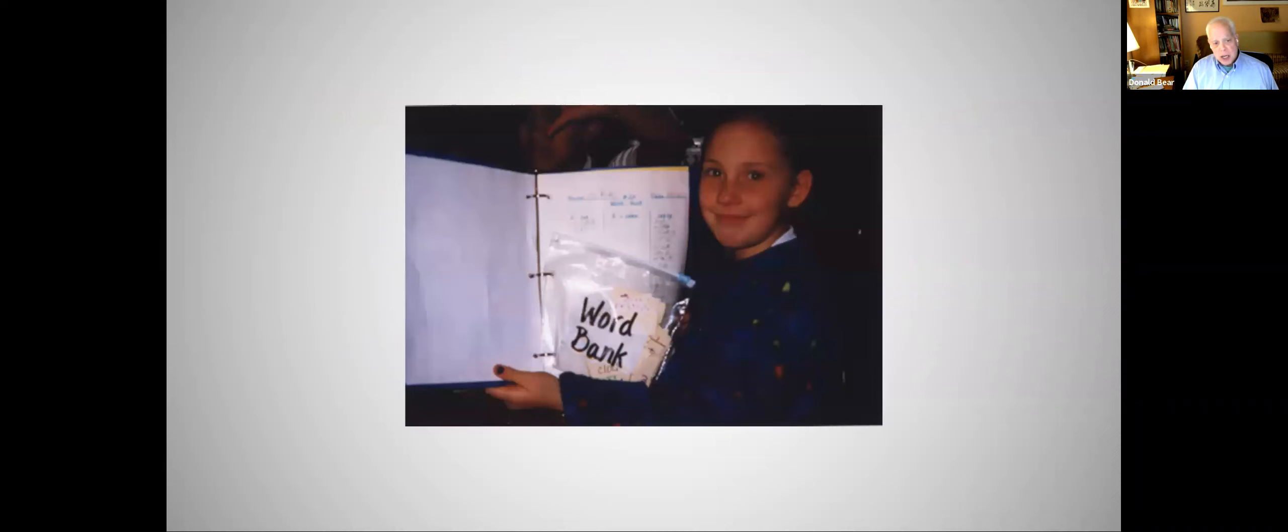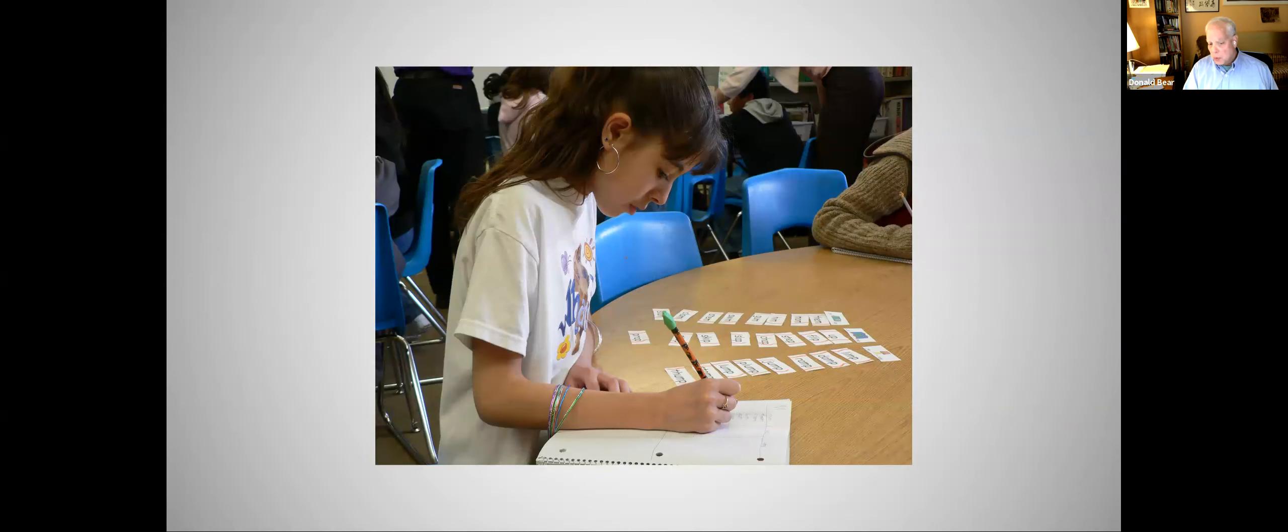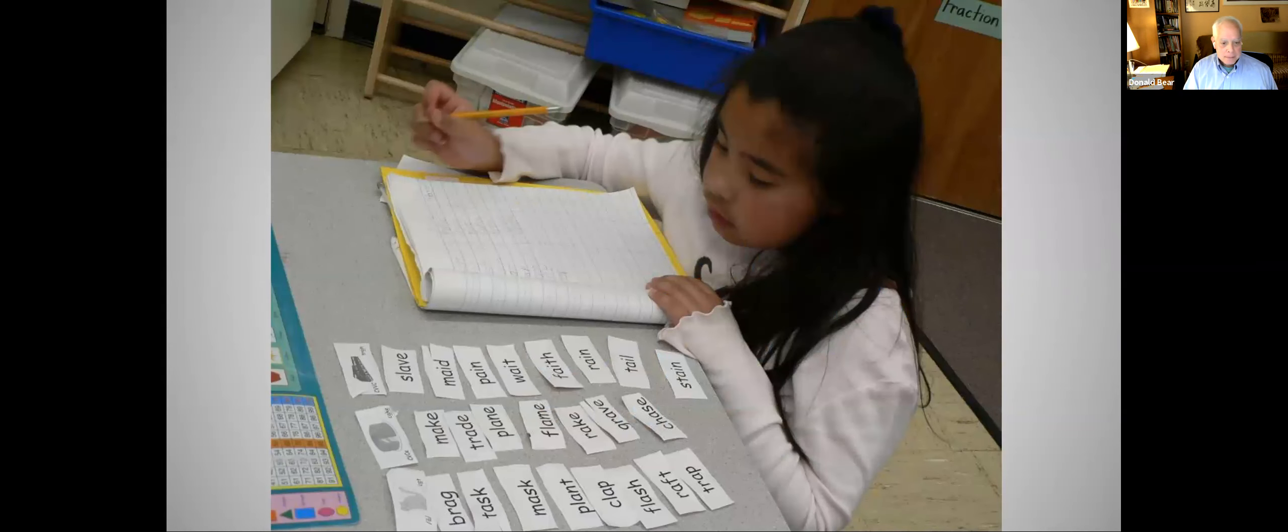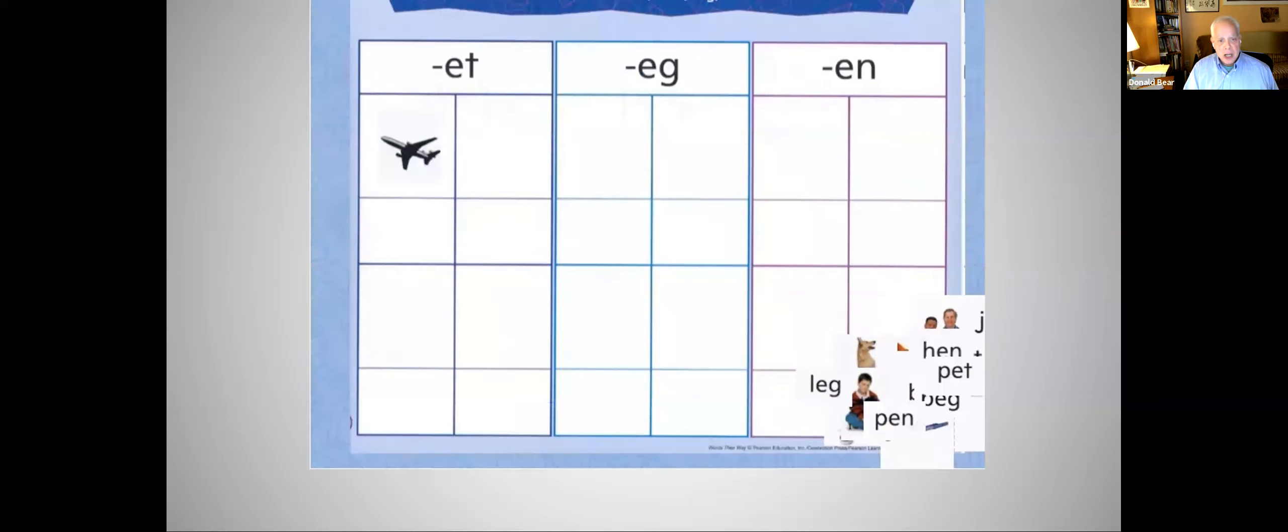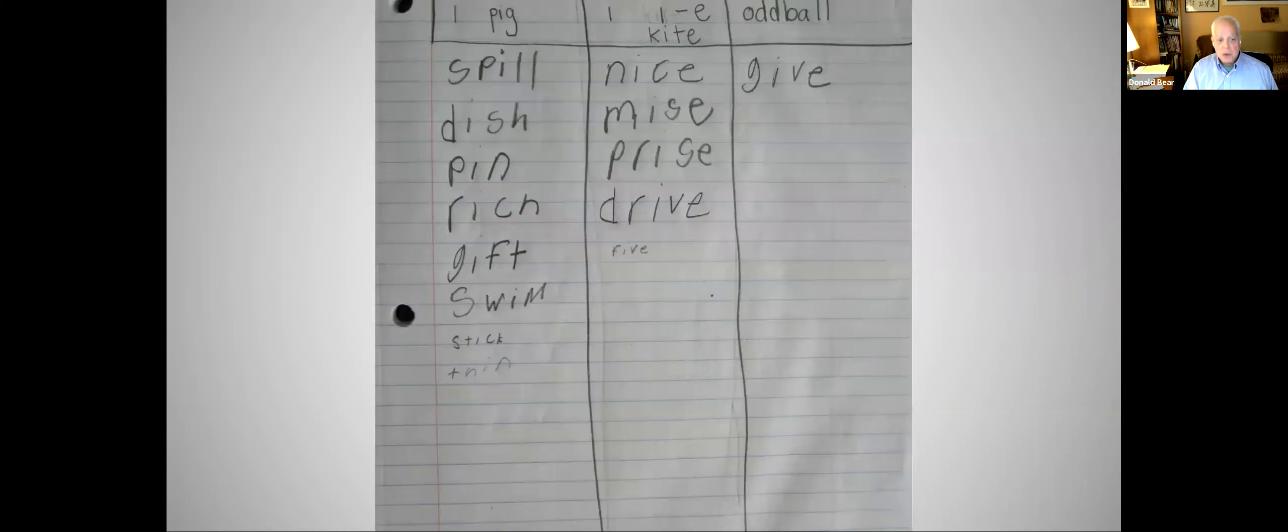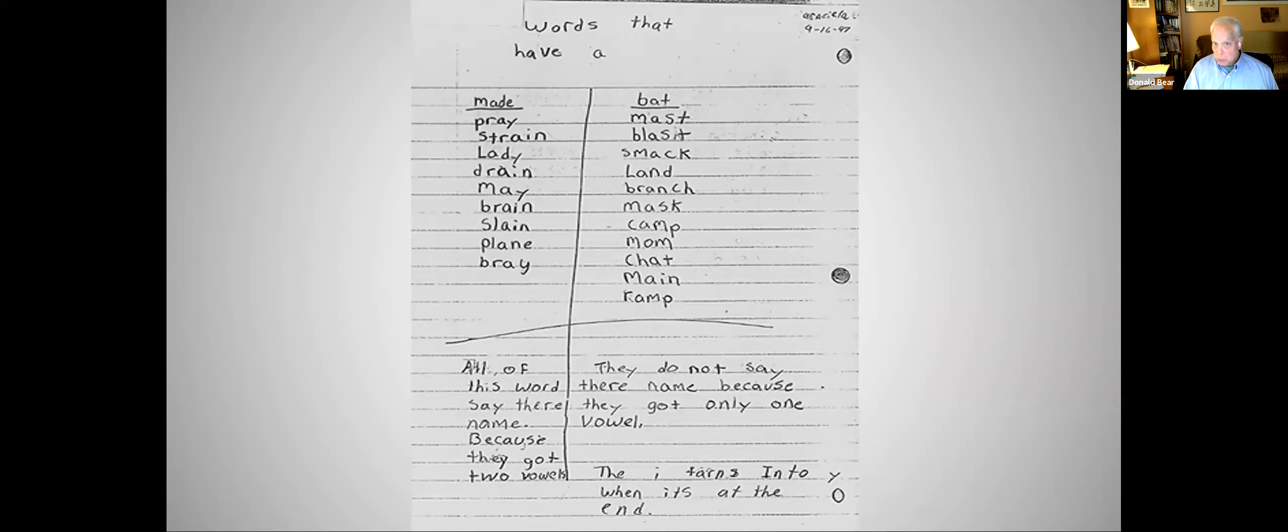So this is a first grade child looking with her word bank, writing the sorts into their word study notebook. So here's a sort that the child did and then would write into the word study notebook. We always have an oddball category as well. And we review these as well to see if they want to change anything. And you can see the reflection at the bottom. All of these words say their name because they got two vowels.